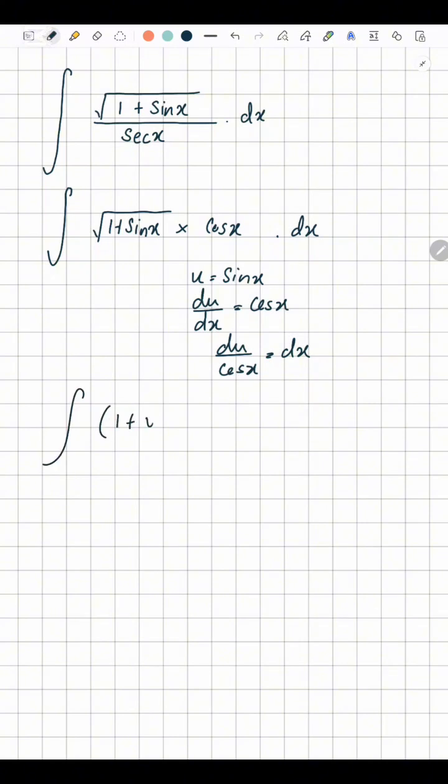Going back into the integral, we can write this as (1 + u)^(1/2) × cos x. Instead of dx, you write du/cos x, and they cancel off.